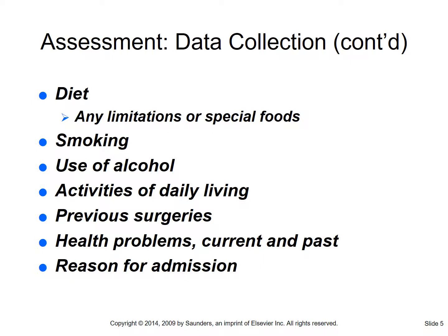We also need to know about diets - what do they follow at home, are there limitations or special foods, culture is a big one here. Smoking history - did they smoke, when did they quit, how many packs per day; we're now also adding chewing tobacco. Alcohol use, activities of daily living, how they care for themselves, any past surgeries, all health problems current and past, why they're here now, and their level of physical fitness, independence, and range of motion.